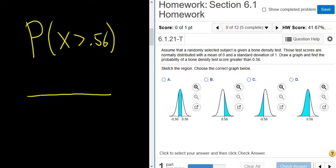So if you graph this, here's the standard normal. Here's 0 in the middle, and then 0.56 is positive, so it's going to be on the right. So you draw a line at the 0.56, and it's greater than, so you shade to the right.